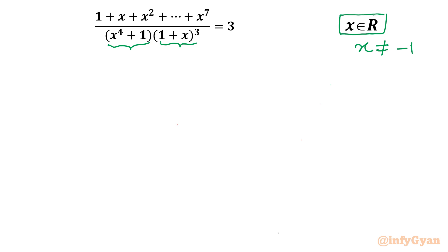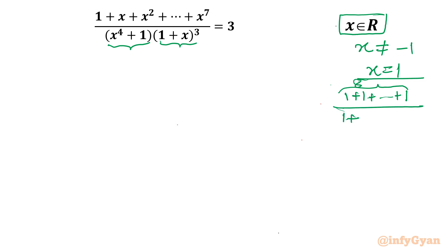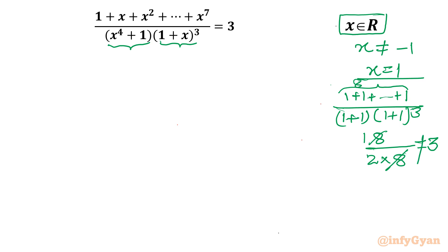Now what will happen at x equal to 1? On the left hand side we will have 1 plus 1 plus 1 up to the last term — there are 8 ones in total. The denominator would be (1⁴ + 1) times (1 + 1)³, which is 2 times 2³, that means 8. So LHS equals 8/8 = 1, which is not equal to 3. Therefore x=1 is not a solution.